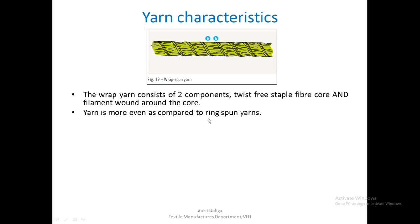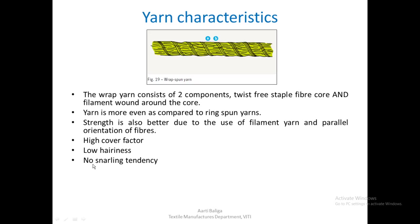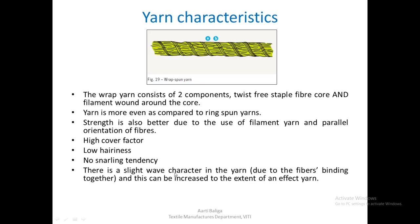Compared with ring spun yarn, the wrap spun yarn is more even and has better strength, because strength comes both from the parallel orientation of the fibres and from the filament yarn wrapping the core fibres. It also has a good cover factor. Since the filament wraps all around, it has low hairiness, and there is virtually no snarling tendency because the only twist inserted is in the filament wrapping — there is no actual twist in the core fibres.